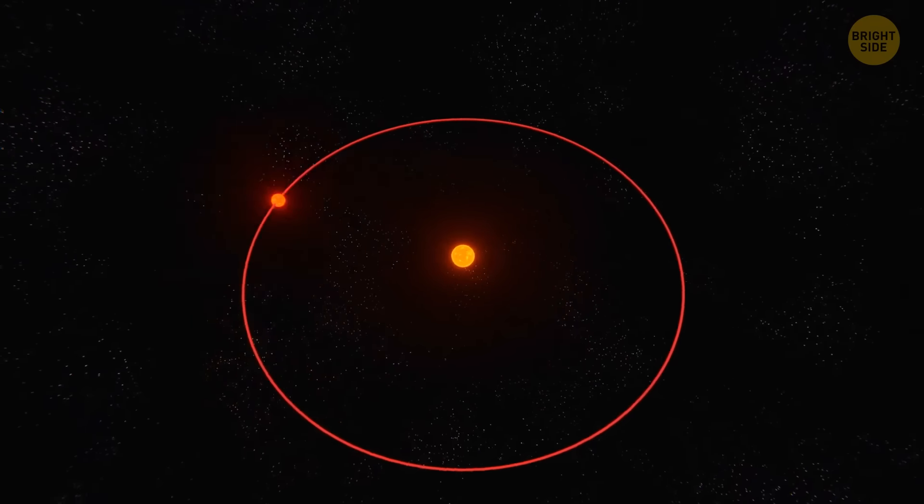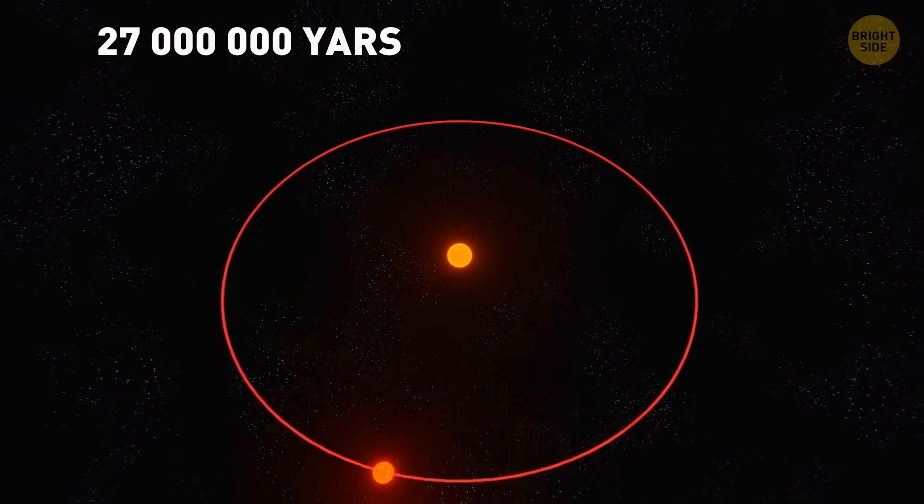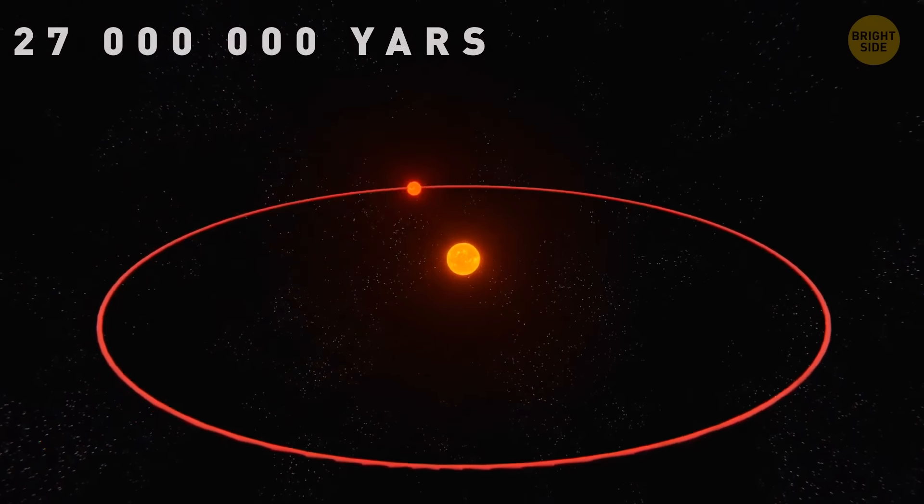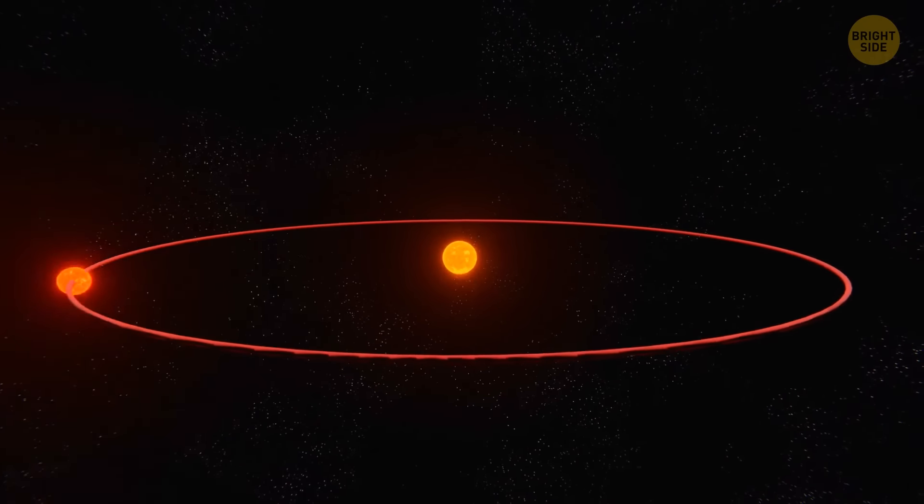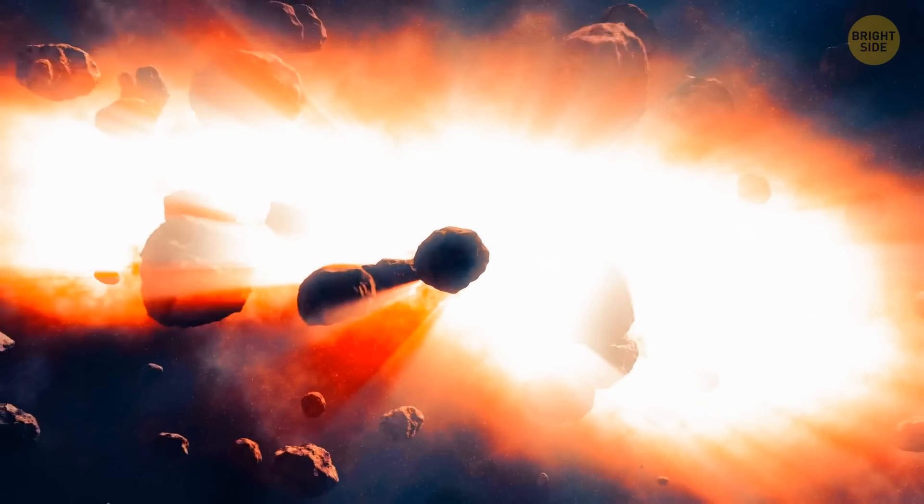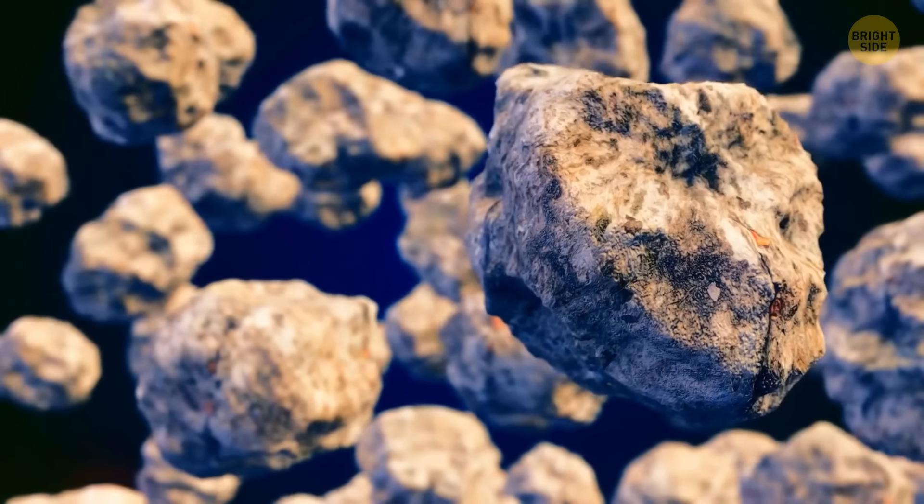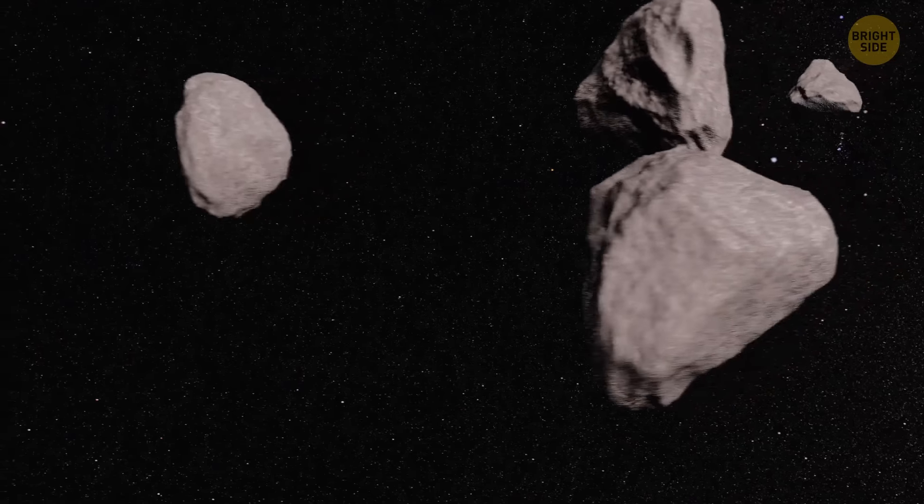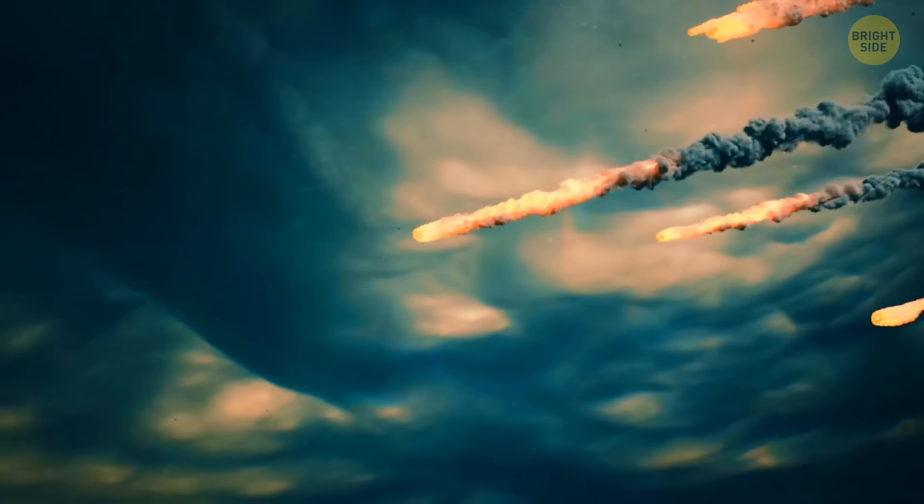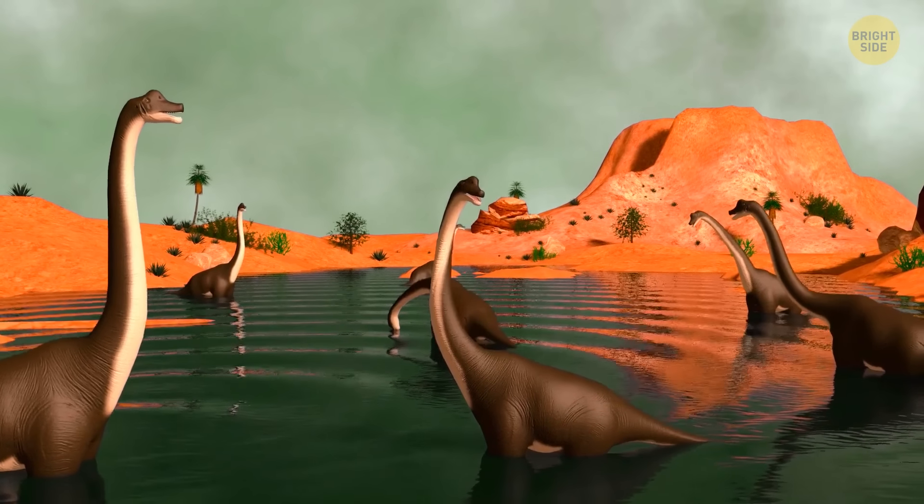This star rotates around the Sun in a huge orbit. And it approximately takes a whopping 27 million years for it to finish its orbit. And when it gets closest to the Sun, it starts to cause complete chaos. While approaching us, this troublemaker changes the trajectories of comets in the Oort Cloud or the Kuiper Belt. As a result, all these comets start to rush straight toward us. Then they crash into the Earth and cause mass extinctions, just like it was with dinosaurs.